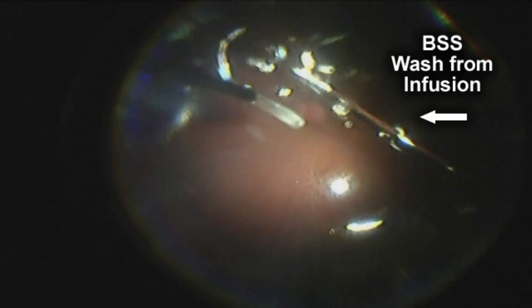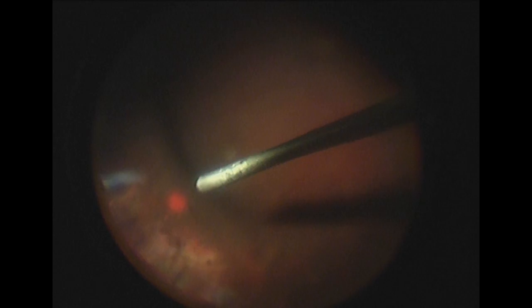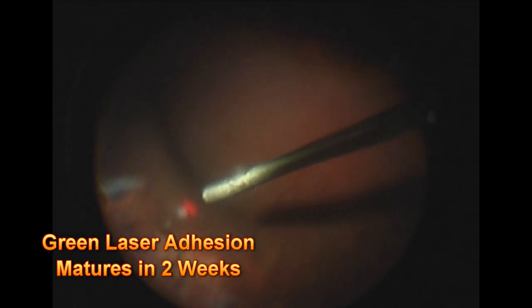In order to remove as much perfluoron as possible, I washed some BSS fluid from the infusion into the eye. Again the eye is filled with air, that little bit of solution is then removed from the eye after doing a little washing machine maneuver in the hopes of removing as much perfluoron as possible from the eye.